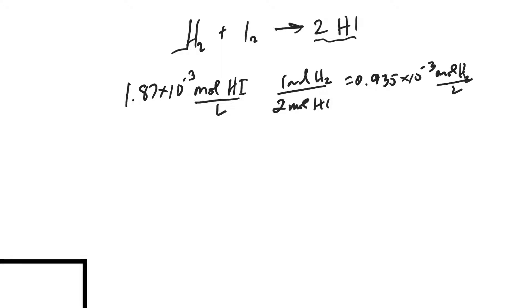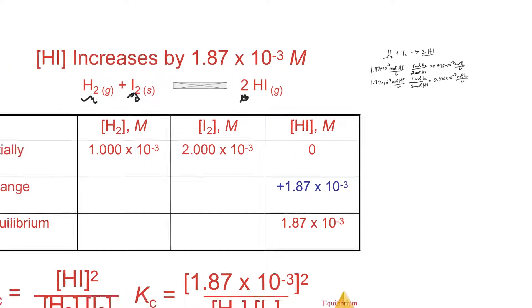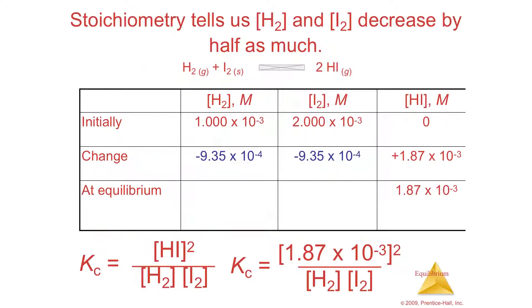Let's do the same thing for the next one. We have 1.87 times 10 to the negative 3 moles of our stuff over liters, and it's 2 to 1 also, okay, so it's 1 mole of I2 over 2 moles of HI, and that is going to be the same. It's going to be 0.935 times 10 to the minus 3 moles of I2 over liters. Okay, so, ta-da!